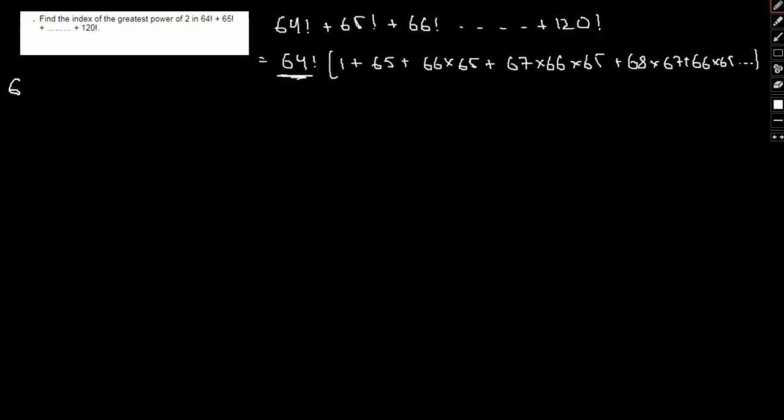Now initially we will focus on only this 64 factorial. So in 64 the highest power of 2 can be given as 32 plus 16 plus 8 plus 4 plus 2 plus 1. So 32 plus 16 is 48 plus 8 is 56, 60, 63. So the highest power of 2's in this regards will be 63.